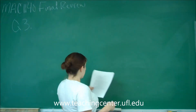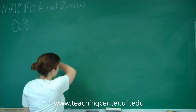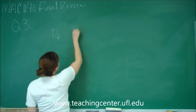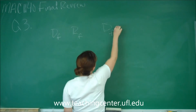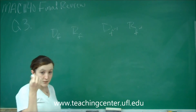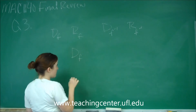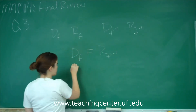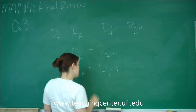So it says for part a, how are the range and domain of f and the inverse of f related? Say I have my domain and my range of my original function. They're related because the domain of your regular function is equivalent to the range of your inverse, and the range of your original function is equivalent to the domain of your inverse.